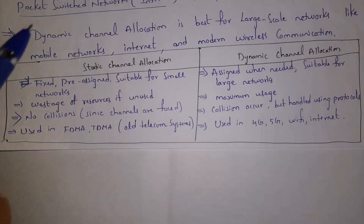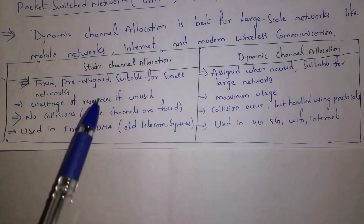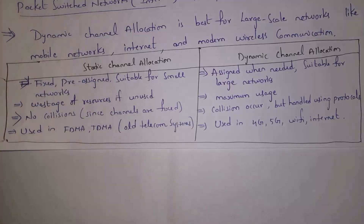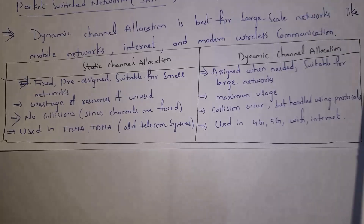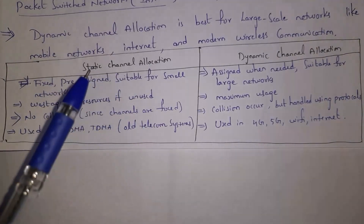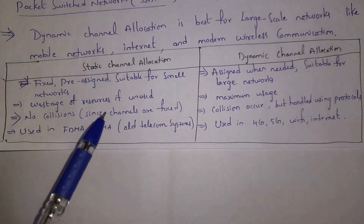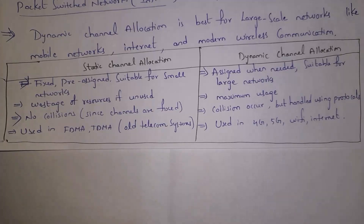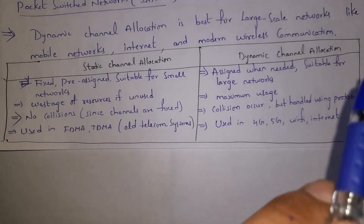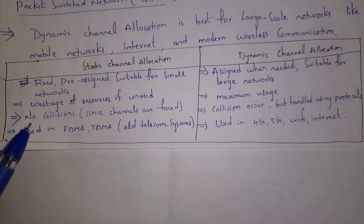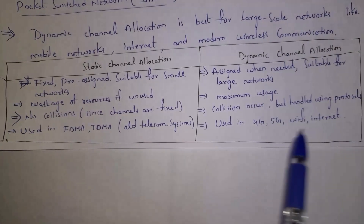The key differences: in static channel allocation, channels are fixed and pre-assigned, suitable for smaller networks, and resources are wasted if unused. In dynamic channel allocation, channels are assigned only when needed, suitable for larger networks, and there is no resource wastage. Collisions do not occur in static allocation, but they can occur in dynamic allocation and are handled by protocols. Static allocation is used in FDMA and TDMA, while dynamic allocation is used in 4G, 5G, Wi-Fi, and internet networks.